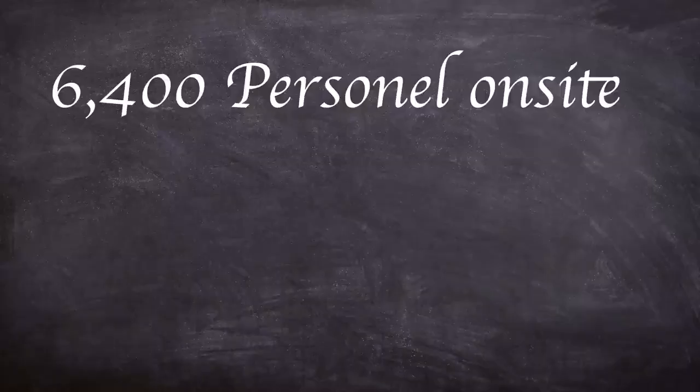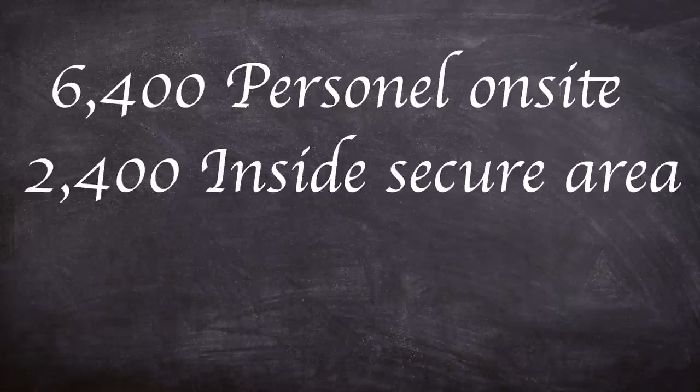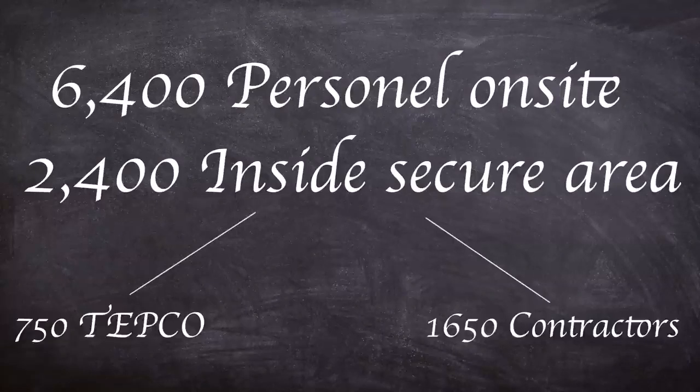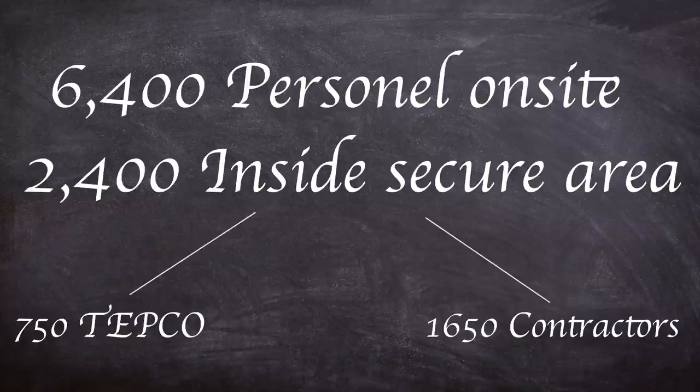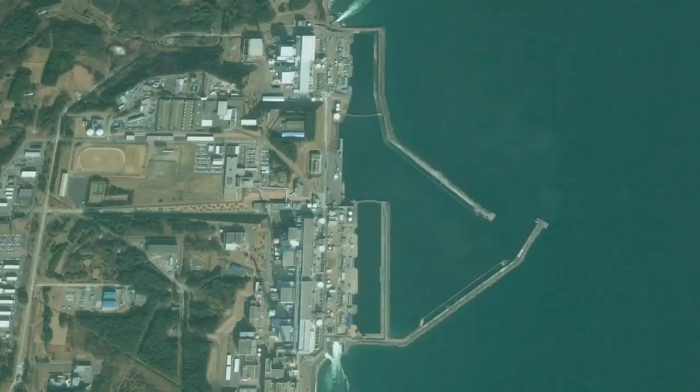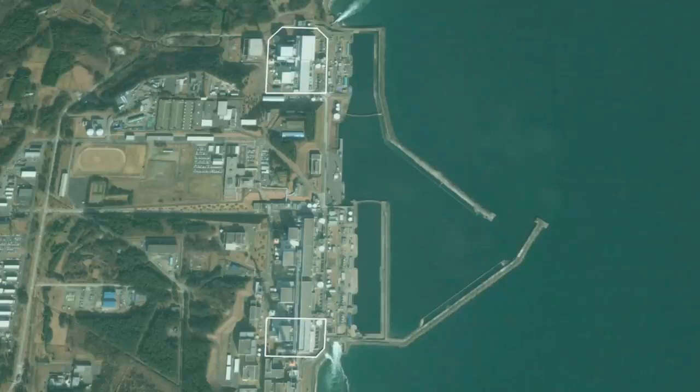There were some 6,400 workers on site, approximately 2,400 consisting of 750 TEPCO personnel and around 1,650 contractors were working in the controlled area, with approximately 2,000 carrying out work in the support of the planned refueling. Unit four had its fuel rods removed and units five and six still had their fuel elements inside the reactors, however the control rods were inserted into the core to stop fission.